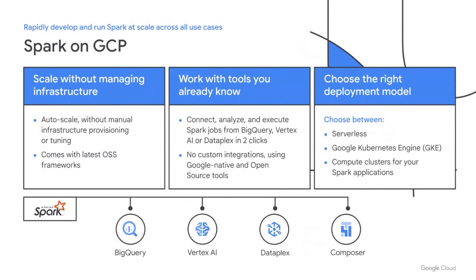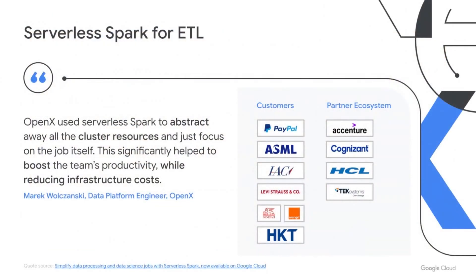Last but not least, we give you the flexibility in how you consume Spark. In addition to serverless, you can deploy Spark on Compute Engine or on Kubernetes. You have a full spectrum of offerings to fit your needs. Serverless Spark for ETL jobs is generally available, and we have seen strong adoption from customers for their data processing pipelines. OpenX has migrated a lot of their ETL pipelines to serverless Spark and is seeing a reduction in cost due to 100% infrastructure utilization in the serverless model, as well as increased developer productivity as no one has to manage clusters anymore. We also have partners who are ready to work with you in implementing serverless Spark in your environment.